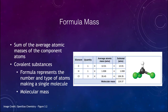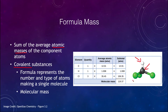First we want to look at the formula mass, which is the sum of the average atomic masses — the atomic weights — of the component atoms. We can look at this in two ways. First we will look at covalent substances, such as a molecule with one carbon atom, one hydrogen atom, and three chlorine atoms. We want to figure out the molecular mass of that molecule by adding up the total atomic weight of each atom.